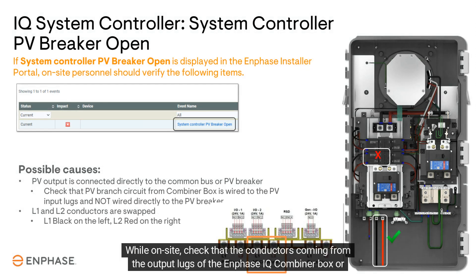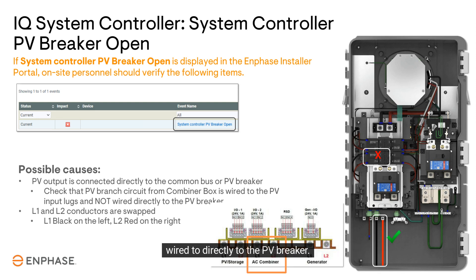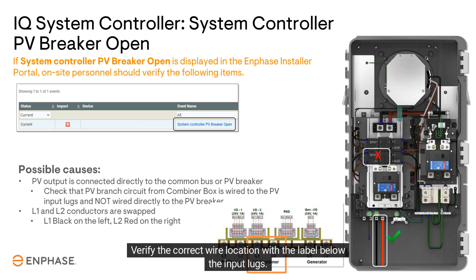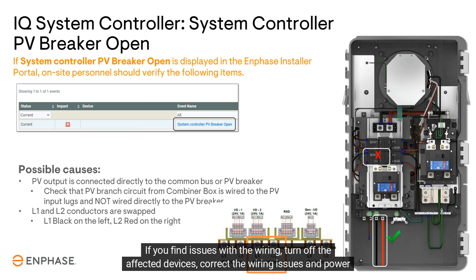While on site, check that the conductors coming from the output lugs of the Enphase IQ combiner box or your custom PV combiner box are wired to the PV input lugs at the bottom of the system controller, and not wired directly to the PV breaker. Verify the correct wire location with the label below the input lugs. If you find issues with the wiring, turn off the affected devices, correct the wiring issues, and power back on.